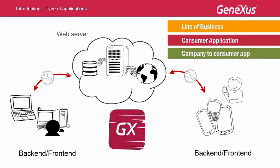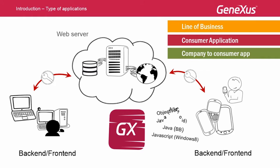Just like the web part was developed in GeneXus and later implemented in one of the available languages — Ruby, Java, or .NET — meaning that GeneXus is multiplatform, the mobile part will be developed in the same way, following the GeneXus logic. That is to say, GeneXus will implement it in the programming language of the selected platform and according to that platform's interface and behavior standards.